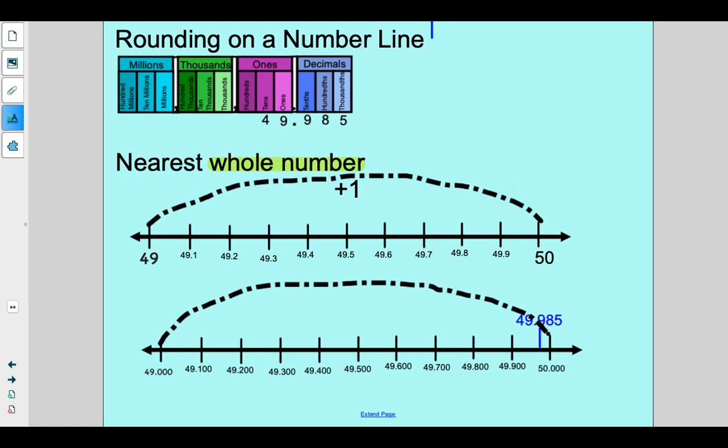So it would go somewhere very close to the 50. Now on our number line, we have to think about what the middle point is. The middle point really tells us which direction it should round to. So if we chopped this number line in half between 49 and 50, this would be our halfway point, right? 49 and five tenths, otherwise known as 49 and five hundred thousandths. Same thing.